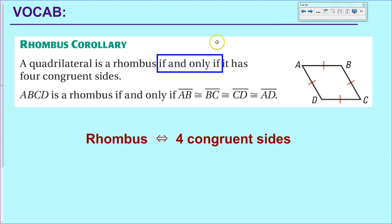So remember that biconditional statements work in both directions. So if you need to prove that something is a rhombus, you can do it using this corollary. Or if you know that something is a rhombus and you need to prove that it has four congruent sides, you can also use this corollary. It works both directions.